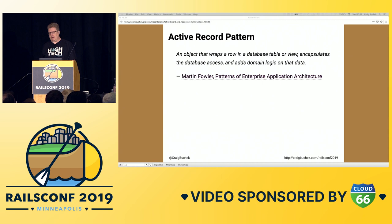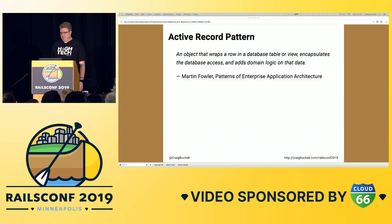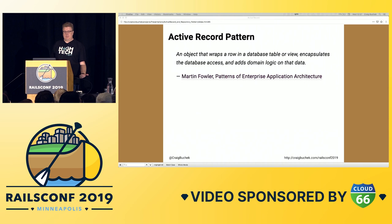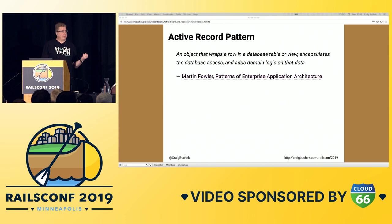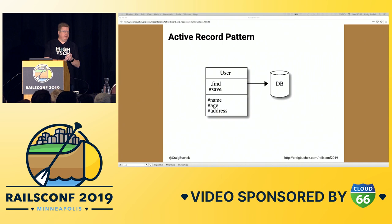Rails Active Record is based on the Active Record pattern. Here's Martin Fowler's definition — I'm not sure if he's the first one to come up with it, but he did document it in Patterns of Enterprise Application Architecture. Note that he lists three separate things: wrapping the database table, encapsulating database access, and adding domain logic. Domain logic is clearly a separate concern, and having that 'and' in there is an indication that we might be violating the Single Responsibility Principle, SRP.